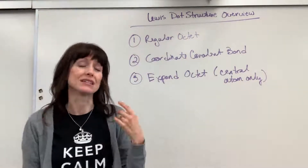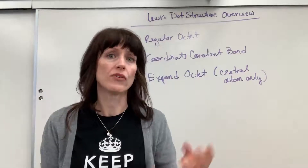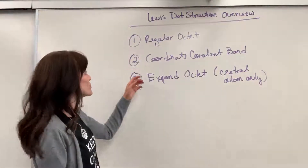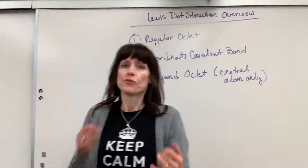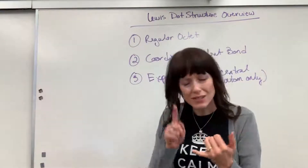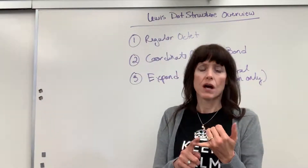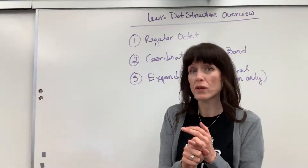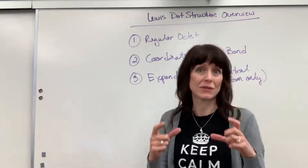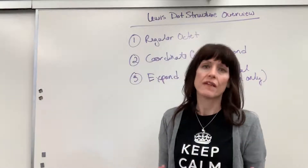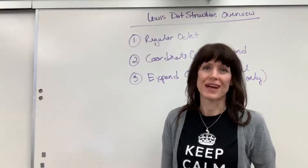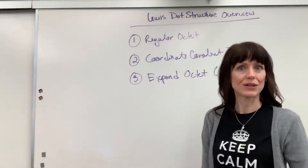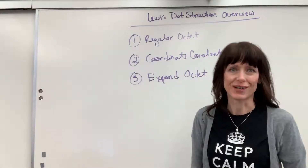The central atom can expand to either 10 or 12 electrons. So there's your rule of thumb. First, always: can you just do a regular octet for all the atoms? If you can't, is there a coordinate covalent bond you could do that still maintains that octet? And if you can't, then you're going to expand the central atom. That is your hierarchy in figuring out how to do Lewis dot structures.